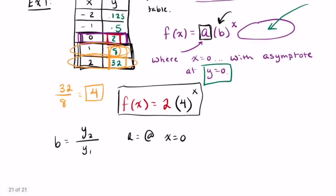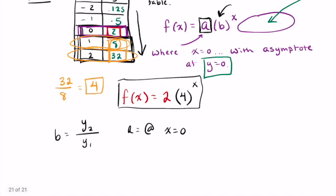In our first example, we're going from something small to something big, which tells me we have a growth and that my b value will be greater than 1.